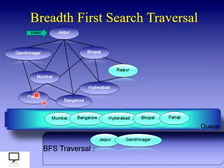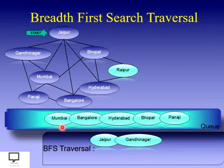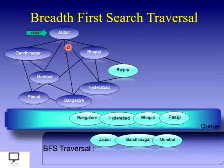We have completed step two for Gandhinagar — all adjacent vertices are either visited or inserted into the queue. Now go to step one and delete the front element of the queue, which is Mumbai, and display it. For Mumbai, check its adjacent vertices: Gandhinagar, Jaipur, Bhopal, Bangalore, and Panji — all are visited, so we do not insert any into the queue.